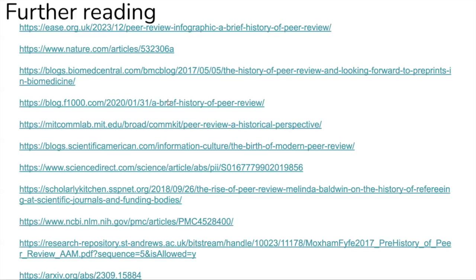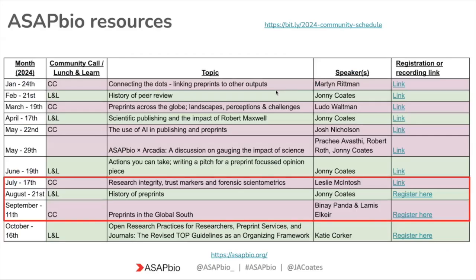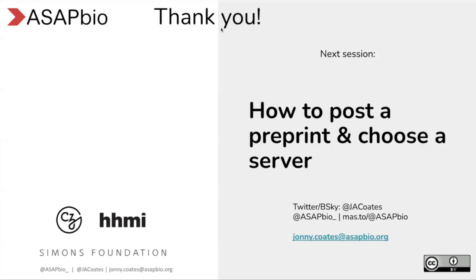There are a whole bunch of additional articles you can go away and read. We also have our 2024 schedule available — it's a live document with links to recordings of past sessions and some highlighted ones particularly relevant to this session including the history of peer review and scientific publishing. The next session will be how to post a preprint and how to choose a preprint server, happening in two weeks.